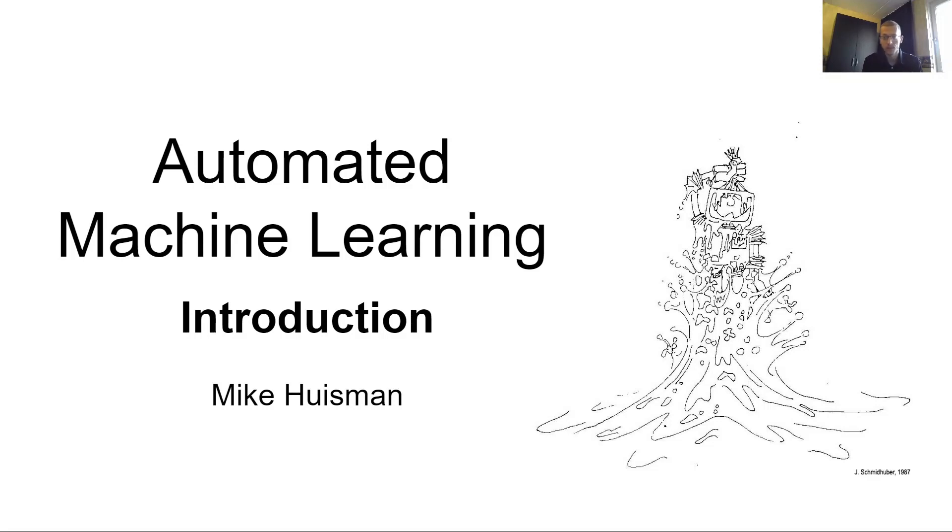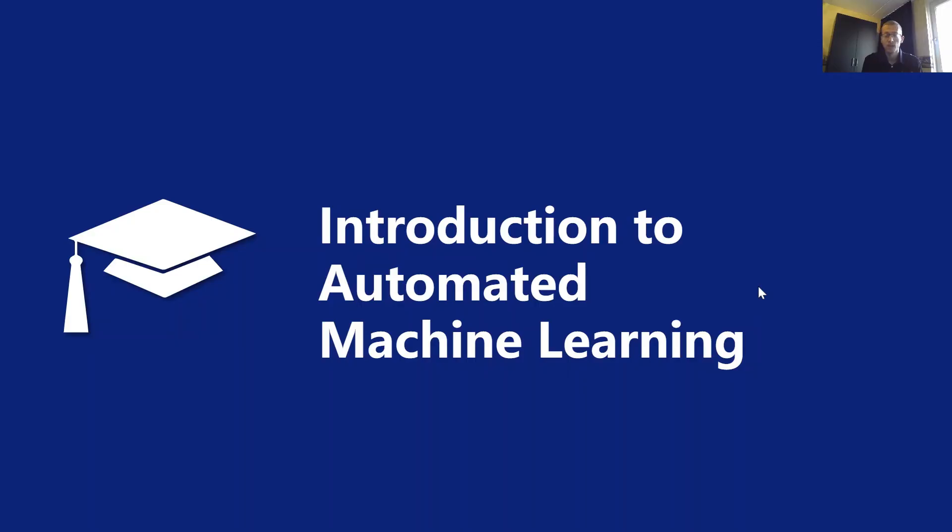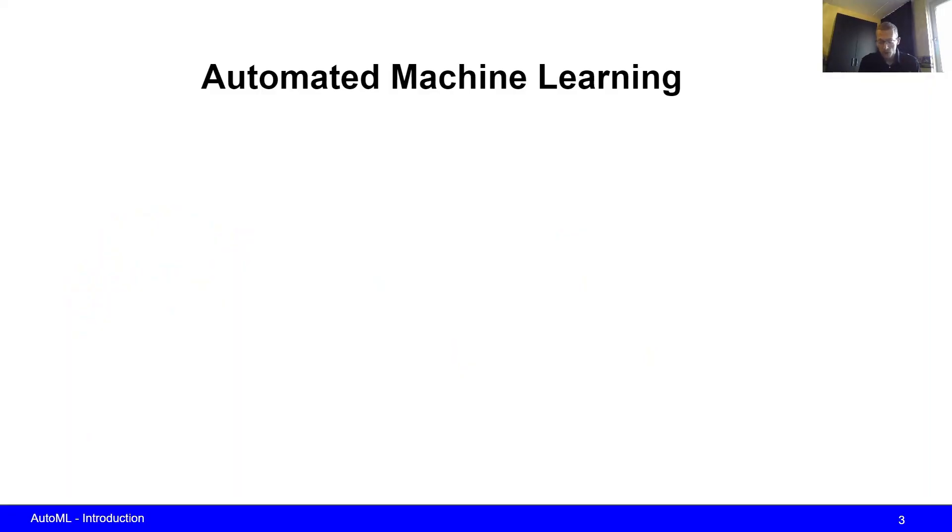Let's start directly. Automated machine learning of course contains the word machine learning, which means that we want a machine to be able to learn to perform certain tasks from data.